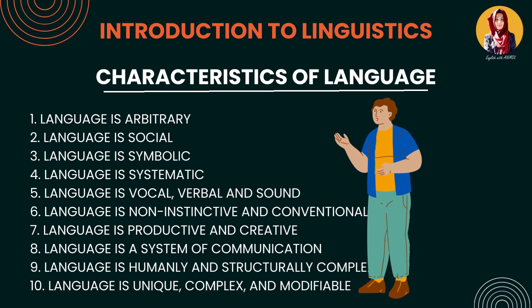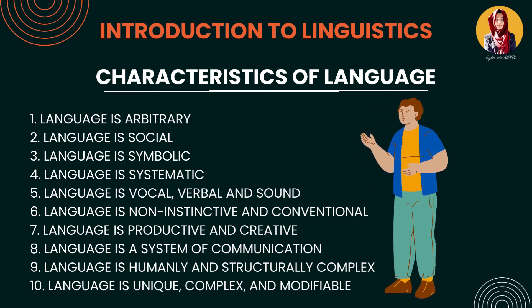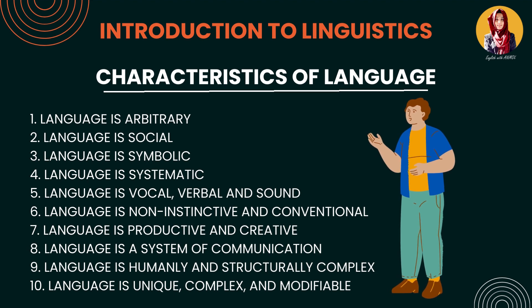Now let's discuss our next topic, i.e., Characteristics of Language. We have 10 different characteristics of language: 1. Language is arbitrary; 2. Language is social; 3. Language is symbolic; 4. Language is systematic; 5. Language is vocal, verbal and sound; 6. Language is non-instinctive and conventional; 7. Language is productive and creative; 8. Language is a system of communication; 9. Language is humanly and structurally complex; 10. Language is unique, complex and modifiable.